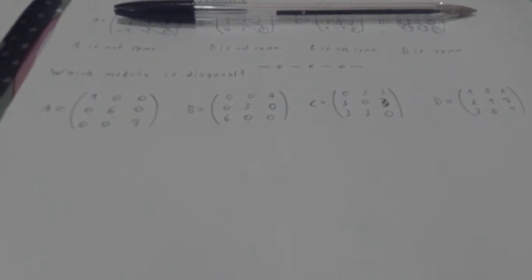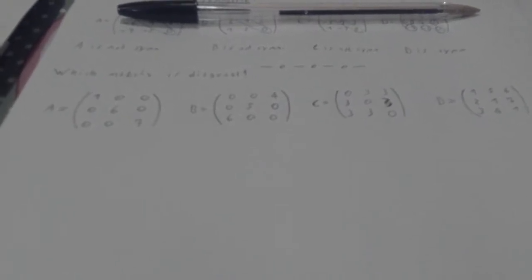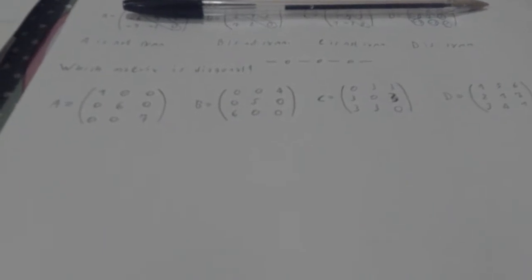In this video I'm going to tell you how to recognize a diagonal matrix. So a matrix is diagonal when every element is null except for the ones on the main diagonal.